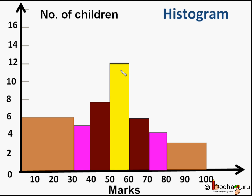That means the frequency of the 0 to 30 class appears higher than the frequency of the 50 to 60 class. But we know from the table, the 50 to 60 class has the highest number of students — that is 12 students. So that is not right. This problem only arises when the width of classes are not equal. Here, most of the classes in the middle are of width 10 marks, but the 0 to 30 class has width of 30 marks and the 80 to 100 class has width of 20 marks.